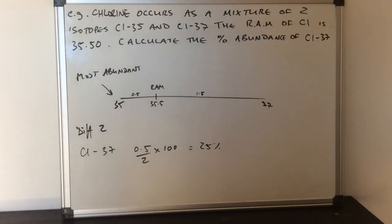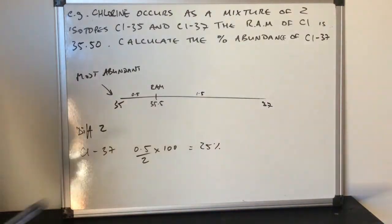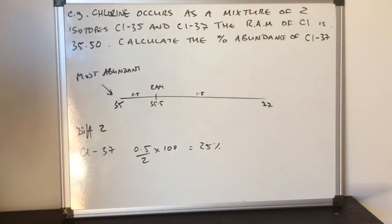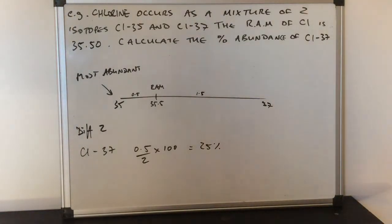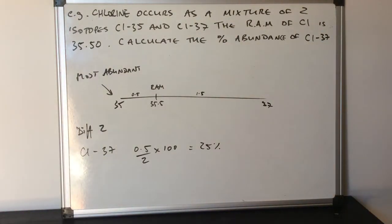If you were asked to calculate the chlorine-35 abundance, it would be this 1.5 divided by the difference of 2 multiplied by 100, which will be the remaining percent which would be 75%.